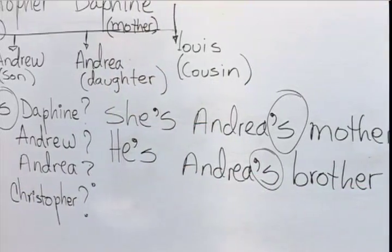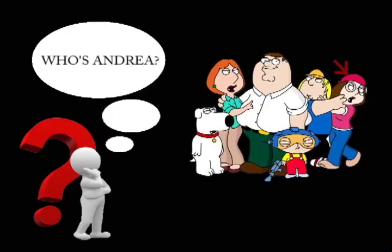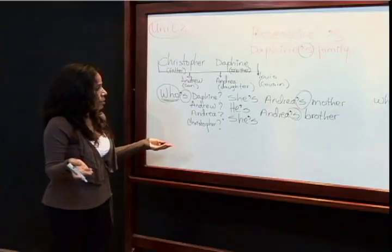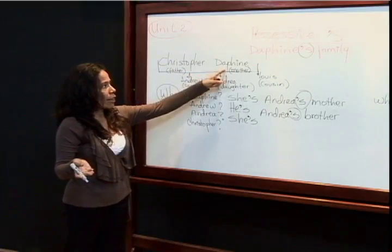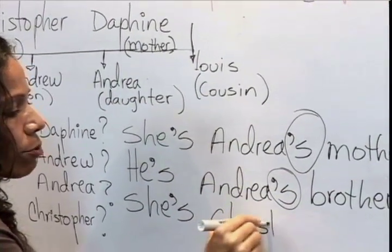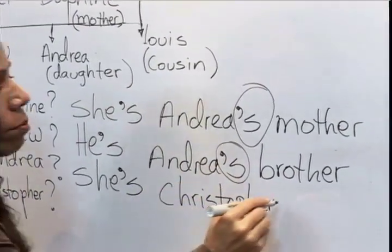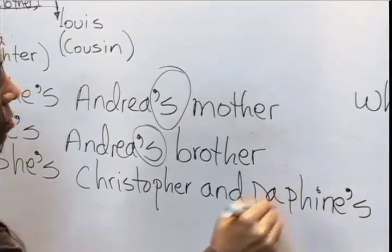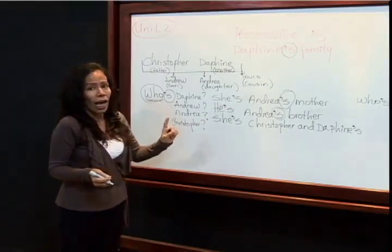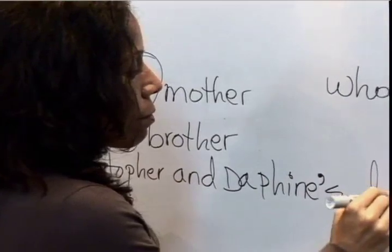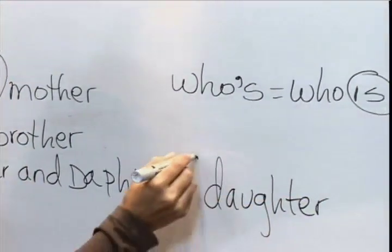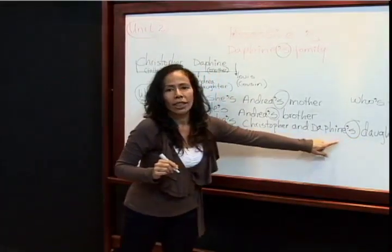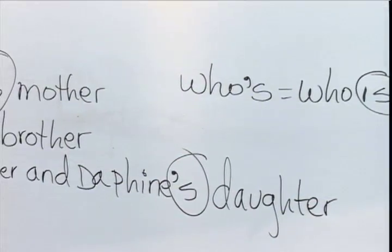Luego, vamos a preguntar: ¿Quién es Andrea? Who's Andrea? Como es una chica, decimos 'she'. She's Christopher and Daphne's daughter. La hija de Christopher y Daphne. No lo olvide: 'de' — posesión o pertenencia.